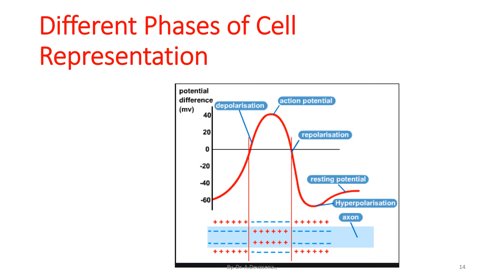Different phases of cell representation: initially the cell is at the resting potential state. When the cell gets excited, it enters the depolarization state, then it follows the action potential. As soon as the action potential peaks, the cell gets repolarized. Then the cell slowly undergoes hyperpolarization, and then it reaches the resting potential once again. This entire process is indicated in the graph.